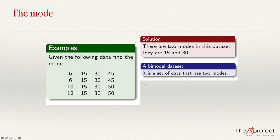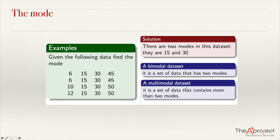We can have even some examples of data sets that have more than two modes. In this case, we say that we have a multimodal data set — a set of data that contains more than two modes. With this example, we conclude the explanation of these two measures of central tendency. Thank you.